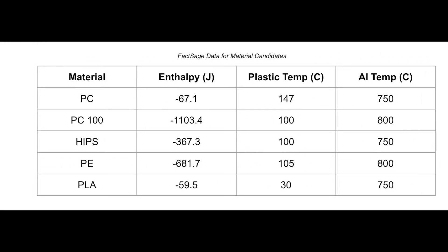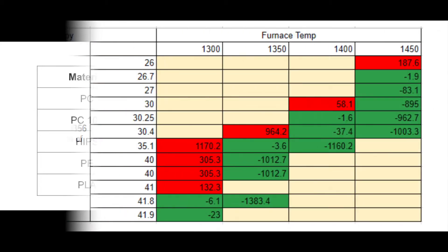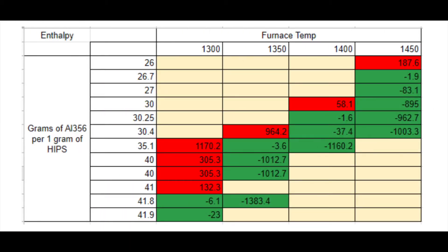Using FACTSAGE, we determined the filaments with the largest negative enthalpies, which would allow them to burn away using the least amount of energy. FACTSAGE also allowed our team to calculate the minimum amount of plastic that could be burned away using one gram of aluminum 356.